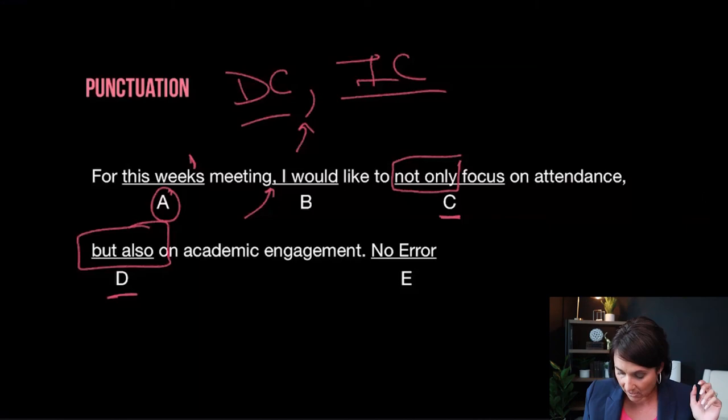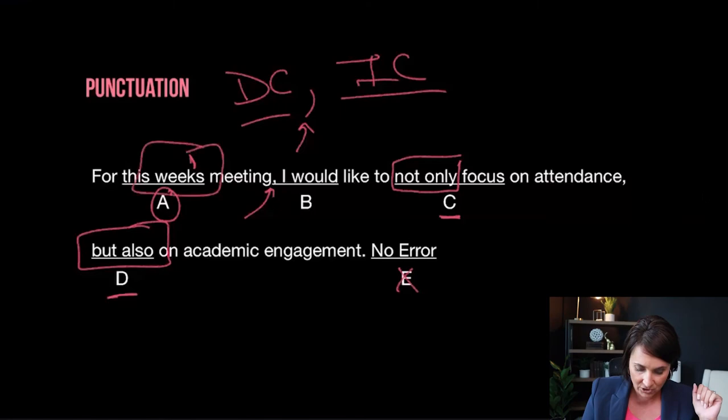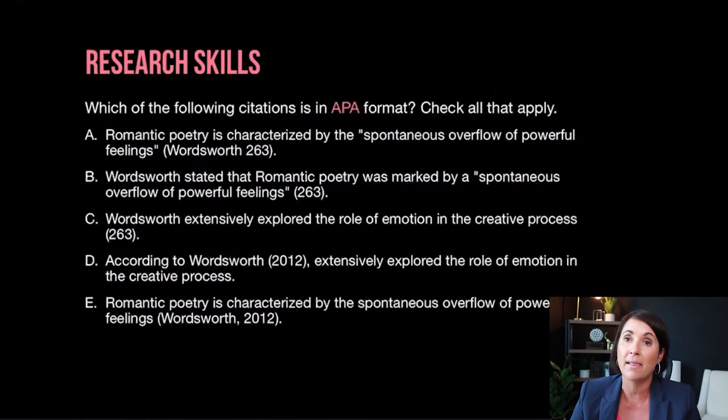C and D are correct, and E is not correct — we want A for "this week's." Now let's talk about research skills. I want to talk about APA and MLA formatting. On the Praxis Core, you will be tested on APA and MLA formatting. In the eyes of the test makers, they want to know that you know how to get research, cite research — it's a really important skill.